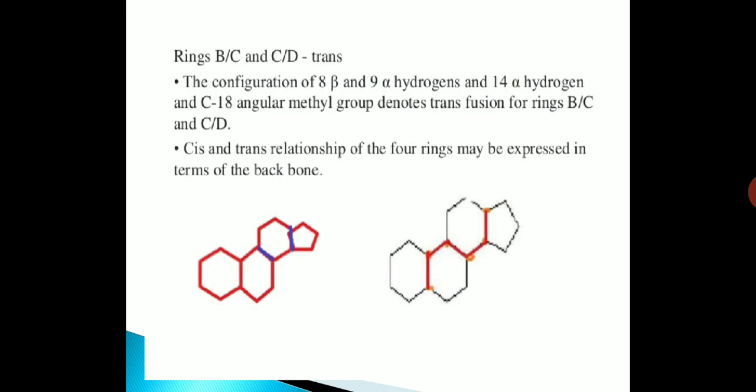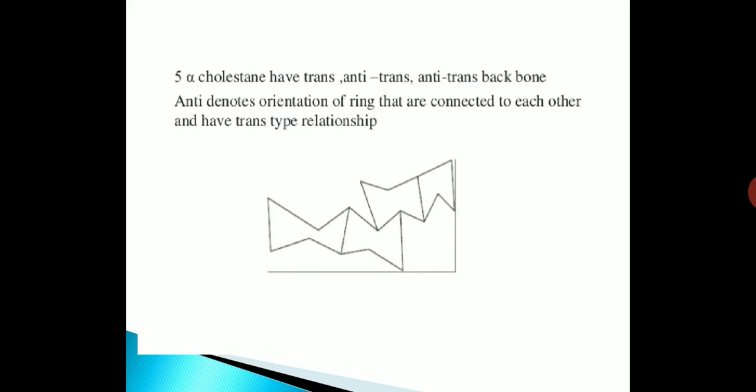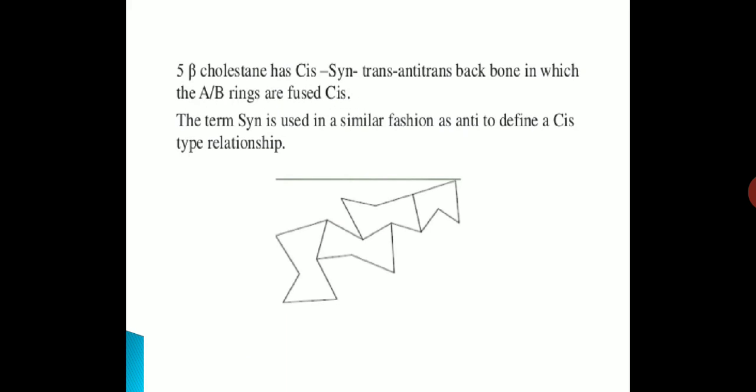Rings BC and CD are trans. The configuration of 8-beta and 9-alpha hydrogens, 14-alpha hydrogen, and the C18 angular methyl group denotes trans fusion of rings B–C and C–D. The cis and trans relationship of the four rings may be expressed in terms of the backbone. 5-alpha-cholestane has a trans-anti-trans-anti-trans backbone, where 'anti' denotes the orientation of rings connected to each other with a trans-type relationship. 5-beta-cholestane has a cis-syn-trans-anti-trans backbone, in which the AB rings are fused cis. The term 'syn' is used in a similar fashion as 'anti' to denote a cis-type relationship.